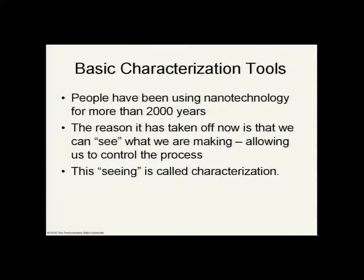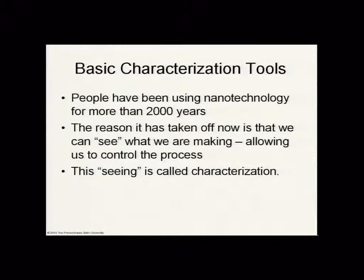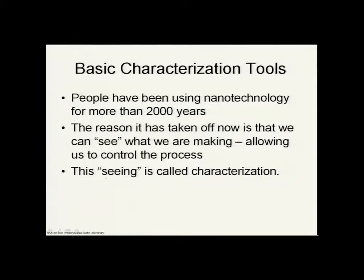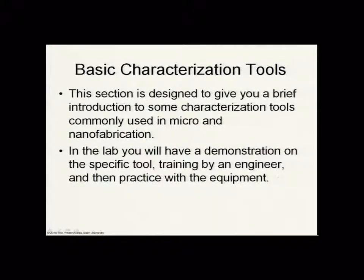One of the reasons that nanotechnology is such a hot topic in research and science today is that we now have tools that allow us to see things at the nanoscale. When we say 'seeing,' we put this in quotes because we're not necessarily talking about seeing with our eyes — we're talking about using instruments and characterization tools to do the seeing for us, or to measure things at the nanoscale. This process of being able to see at the nanoscale is called characterization. Using characterization tools allows us to see, quantify, and measure things at the nanoscale. This note packet is designed to give you an introduction to some of the tools commonly used in micro-nanotechnology.